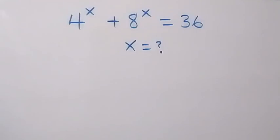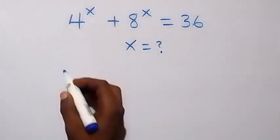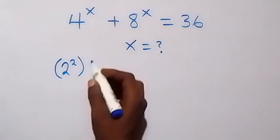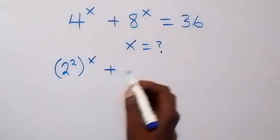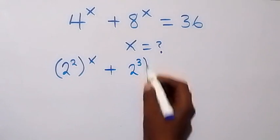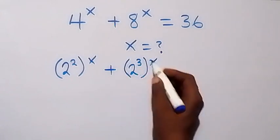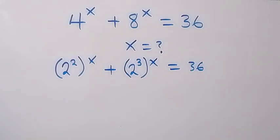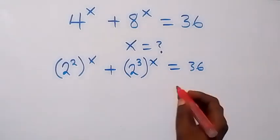Hello, you're welcome. How to solve this nice exponential equation to find the value of x. Here, let's rewrite 4^x as 2 squared raised to power x, and 8^x as 2 raised to power 3 raised to power x, which equals 36. From the law of indices, when we have something of the form a raised to power m raised to power n...